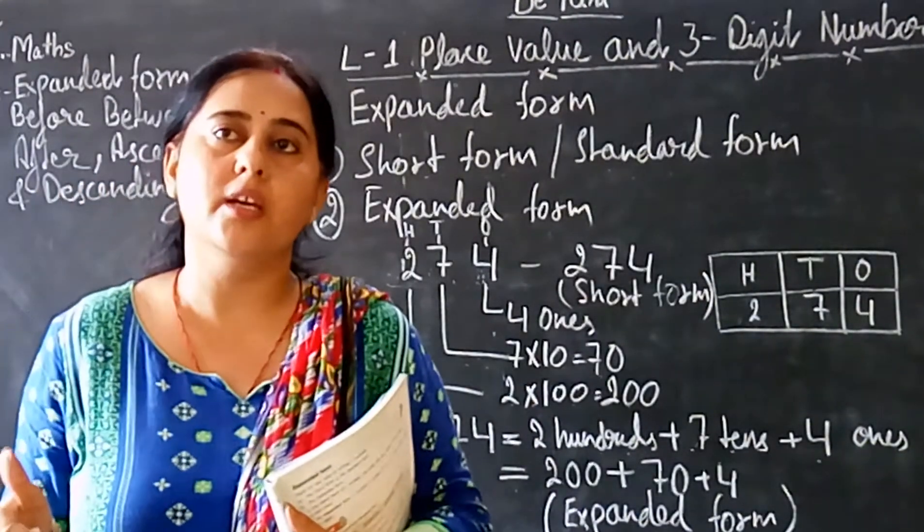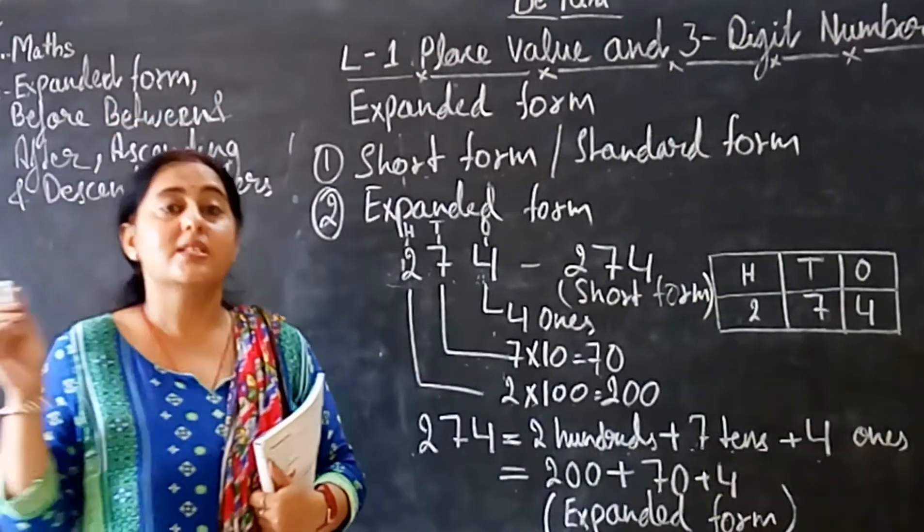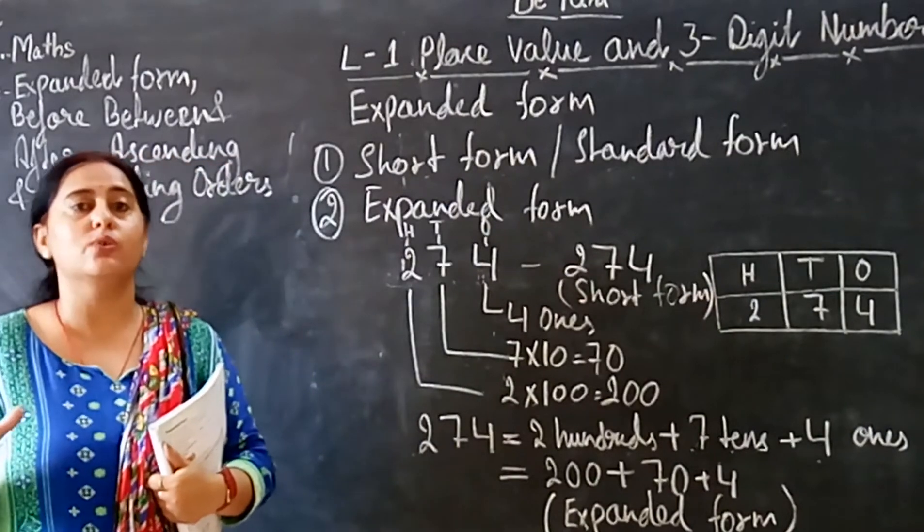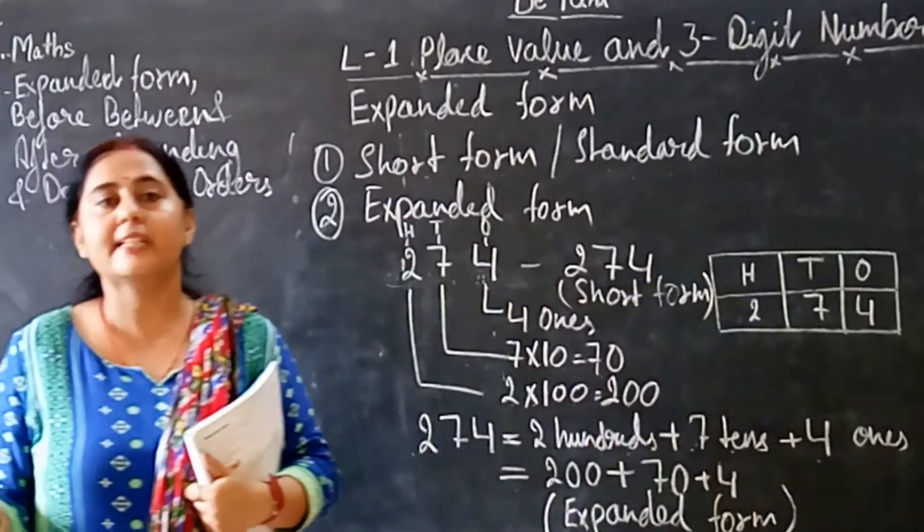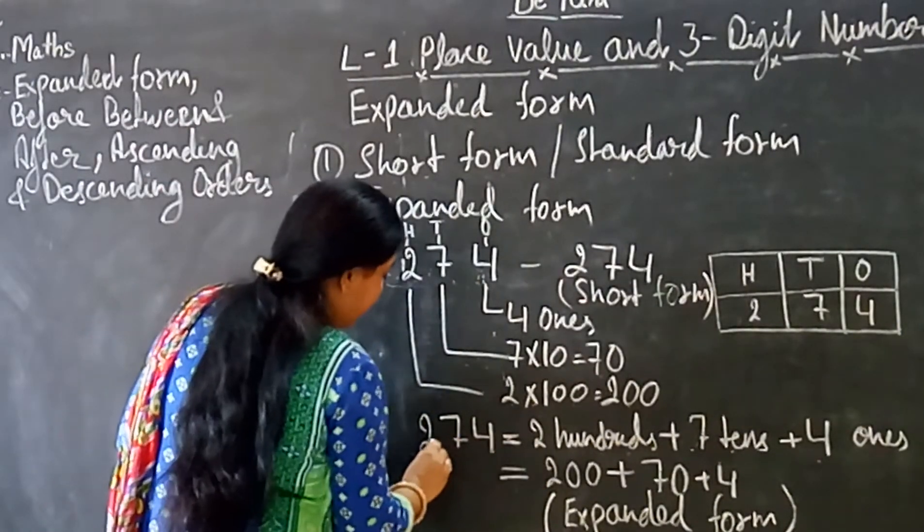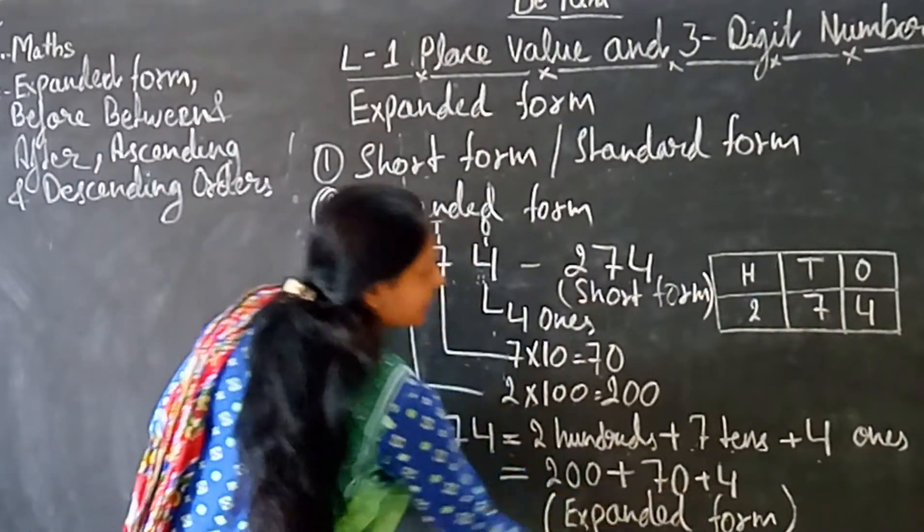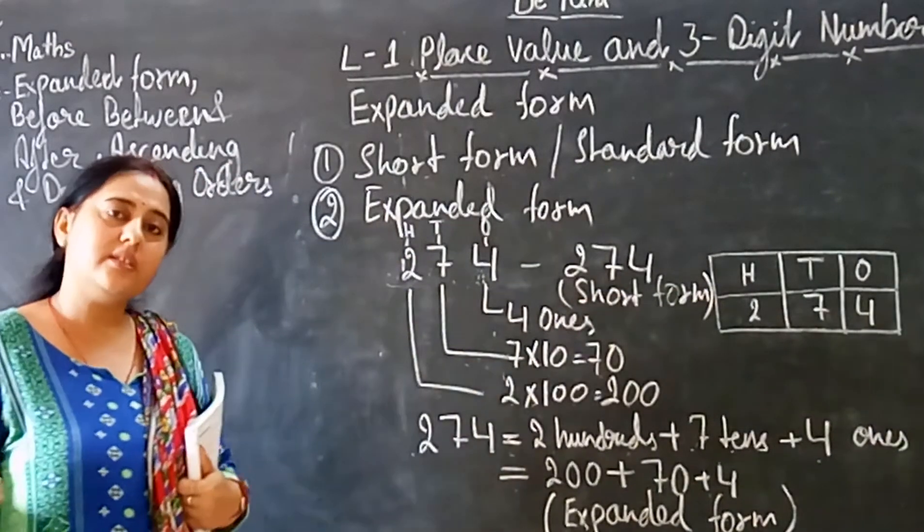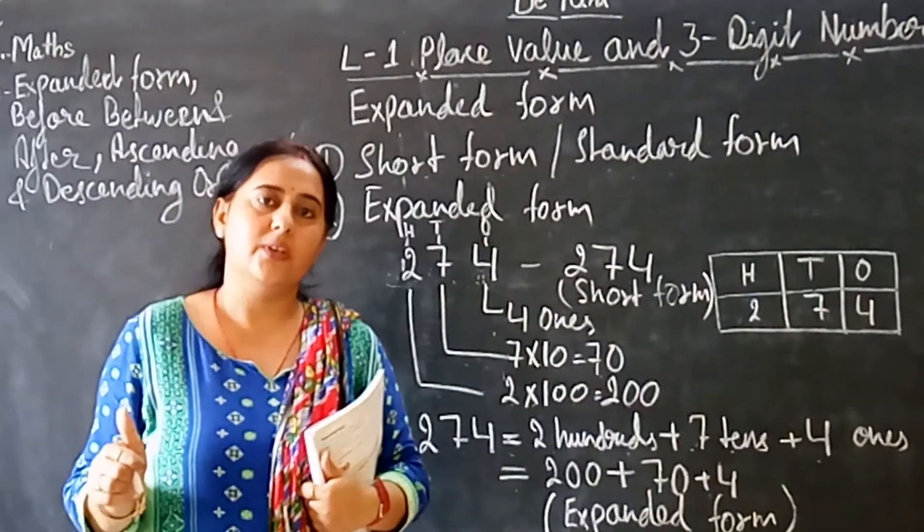What it means? In expanded form, we just write the sum of place values of the given number. Kya likte expanded form me? We write place values. Got it? Samaj gaye sab?